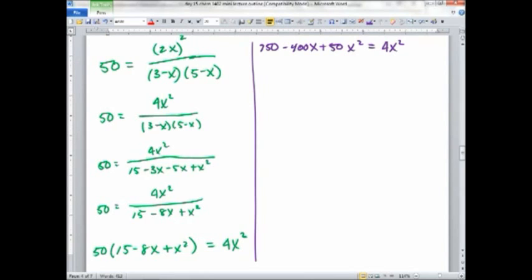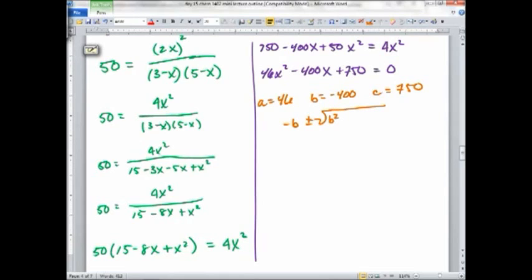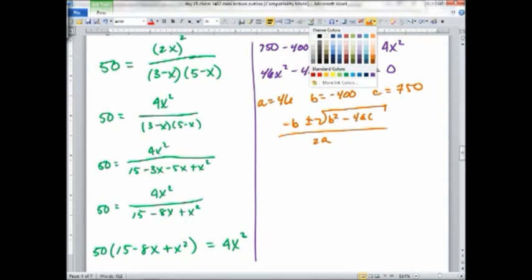Javier, remember the goal. AX squared plus BX plus C equals 0. What would you like to do now? Yeah, I think that's a good idea. Let's multiply that 50 through. 50 times 15 is 750, and 50 times negative 8 is negative 400, and 50 times X squared is 50X squared. That whole thing has to equal 4X squared. Matthew, now you want to set it equal to 0? Yeah. Subtract 4X squared from both sides. You end up with what in front of the X squared? 46. Let's write that first because that's my A. Minus 400X plus 750. Now I know what my A, B, and C are. My A is 46. B is negative 400. That's a big deal. And my C is 750.